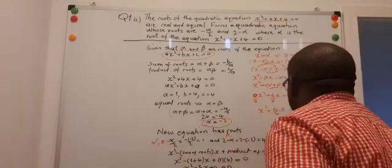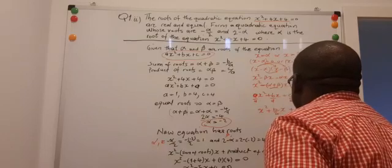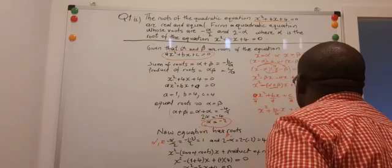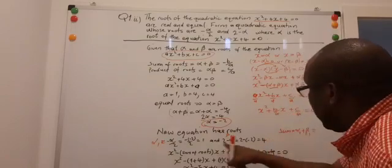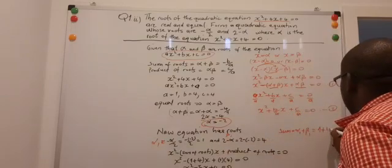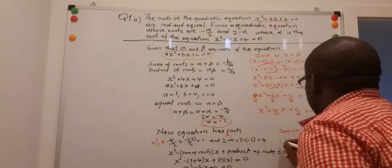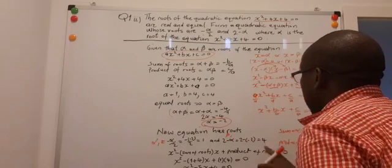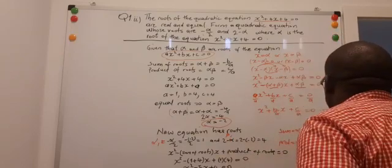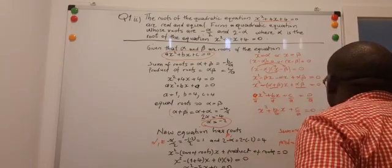So, it means that I have now my α₁ and my β₁. I just need to look for the sum of those roots. The sum of the roots is α₁ + β₁ = 1 + 4 = 5. The product is α₁β₁ = 4 × 1 = 4.